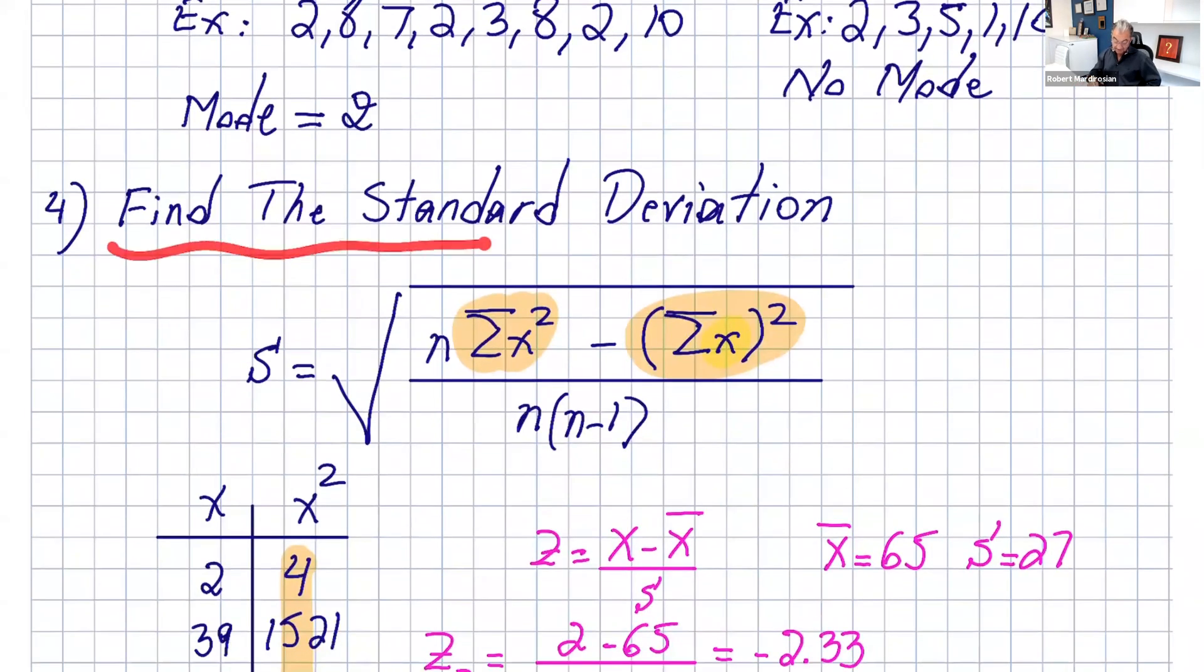Next, finding the standard deviation. Let's get used to the formula. Standard deviation is square root of n times sum of x squared minus sum of x quantity squared, divided by n times n minus 1. We know n is 15 for our data.